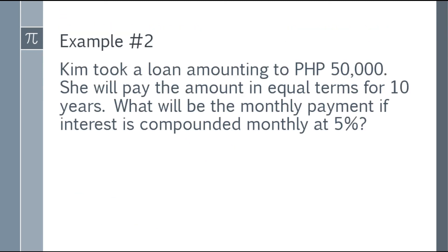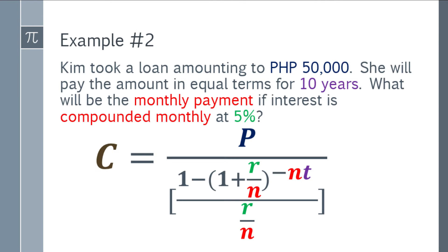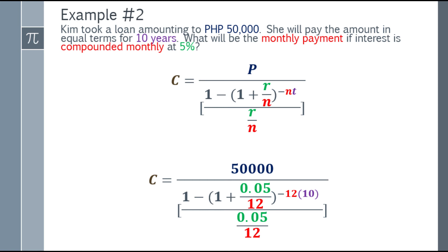Let's move on to example number 2. Kim took a loan amounting to 50,000 pesos. She will pay the amount in equal terms for 10 years. What will be the monthly payment if interest is compounded monthly at 5%? Again, first step: write the formula. Next, substitute the values. For the present value, that will be 50,000. Substitute into the denominator below 50,000: 1 minus the quantity (1 plus 0.05 over 12), with exponent negative 12 times 10. And the bottom fraction will be 0.05 over 12.